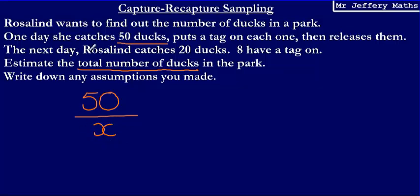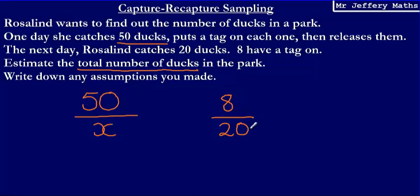Then I'm going to think about the second day. We're told that Roslyn catches 20 ducks and that 8 have a tag on. So we had 8 with a tag out of the 20 ducks she caught in total on that second day. The key idea for capture-recapture sampling is that these two proportions should be equivalent to each other. The number caught with a tag on the second day compared to the total caught should equal the number tagged on the first day compared to the total population.